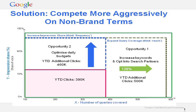Moving on to the solution: currently they are getting 390,000 clicks. By increasing their keyword basket to include generic keywords — broadening the basket of keywords we know users are searching for — they could get 500,000 additional clicks. Added to that, by optimizing their budgets, an additional 460,000 clicks. We'll show you how we actually came up with those figures because analyzing the opportunity and presenting it to the client is going to be one of the most important techniques you'll need to learn.